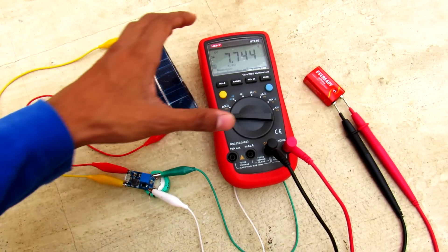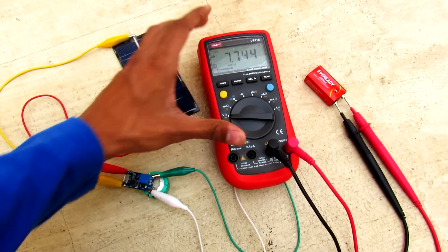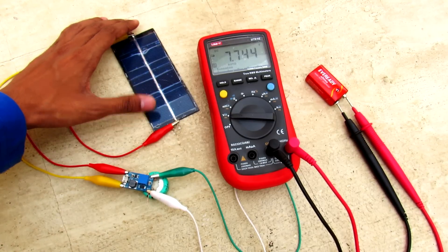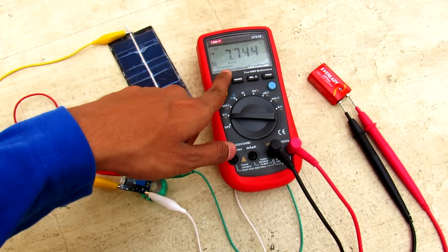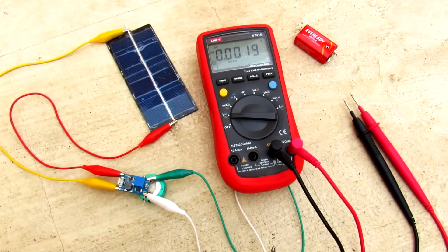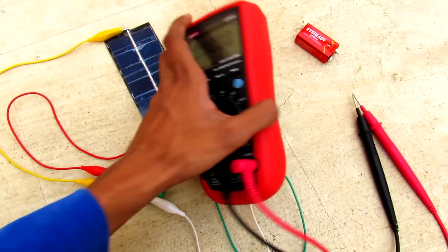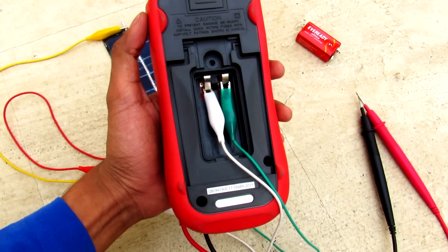What's going on guys, it's Keda here and this multimeter is totally powered by this solar panel over here. It is measuring its own dead battery at 7.7 volts. You can see there are no batteries on the back.